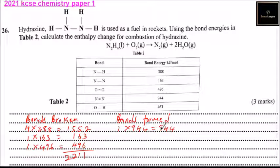The other bond is hydrogen and oxygen. So there are four of them. So we multiply 4 multiplied by 463, and when you multiply, you get 1852.